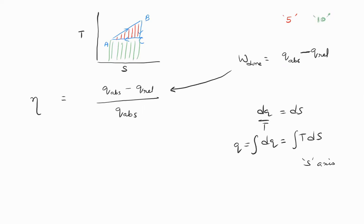I'm going to determine the efficiency of the engine. What is the Q absorbed? Step by step, let us calculate what is the Q involved in the different processes: AB, BC, and CA. So in AB, the Q involved is equal to area under the AB line, just the AB line, which is 5 plus 10.